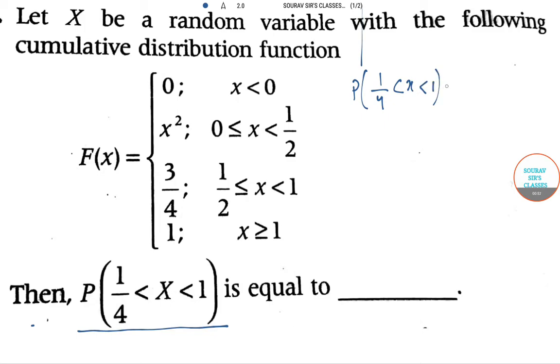The probability of 1/4 < X < 1 is given by F(1) minus F(1/4). Since x is less than 1, we can't take the F(x) = 1 case. Instead, we take F(1) to be 3/4 because x less than 1 satisfies this part of the function.